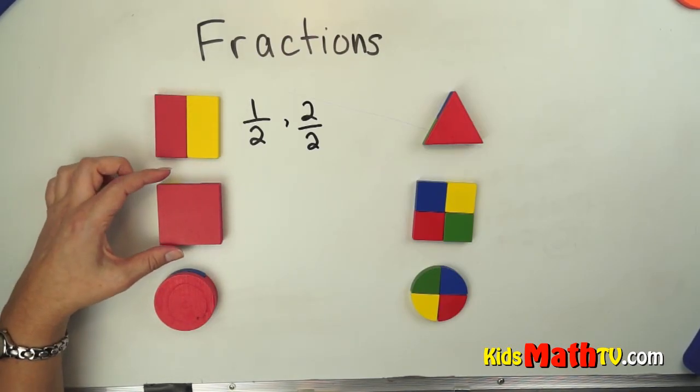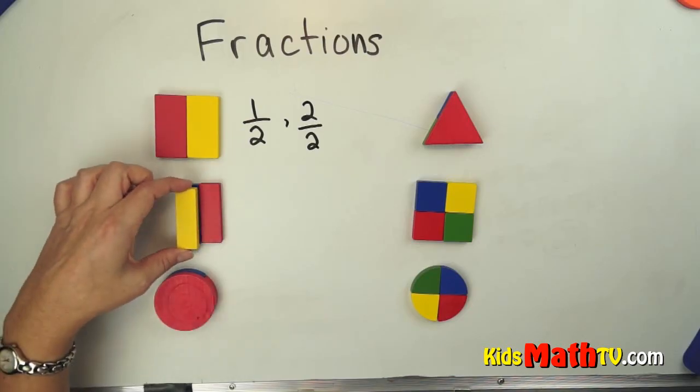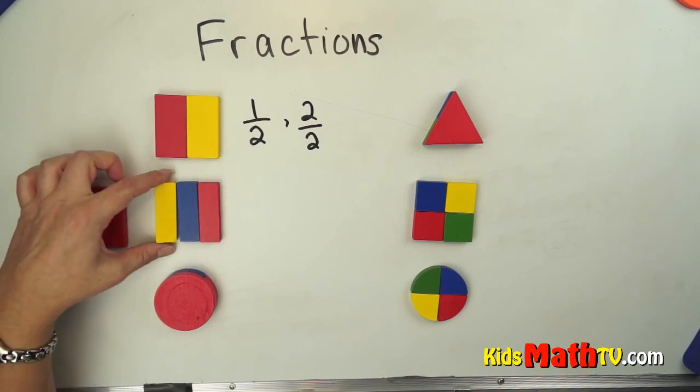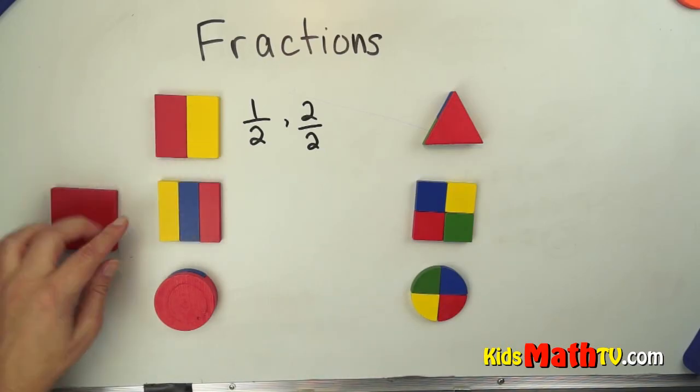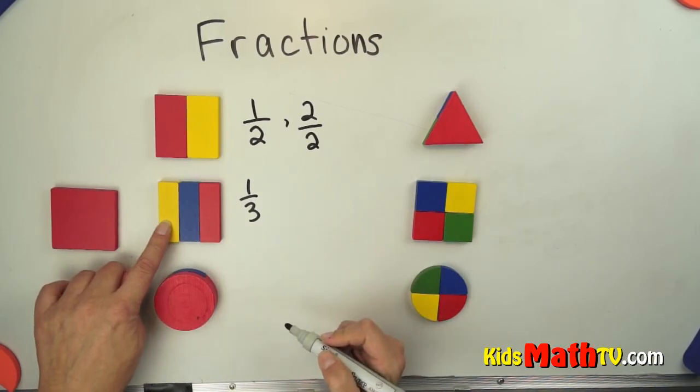In this case, we have the same shape square. But this time it's split up into three equal parts. If I put those on top of each other, they're exactly the same shape and size. So three equal parts of this one whole. We can have one out of three parts, which is one third.